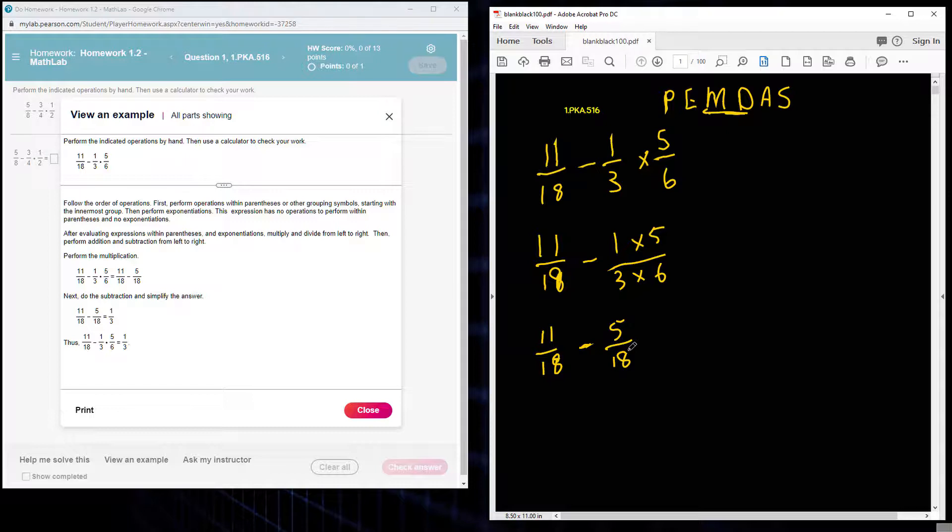Now our next step is that all we have left is subtraction and addition. Since they have the same denominator, you can just go ahead and subtract the numerators. So we'll have 11 minus 5 divided by 18.